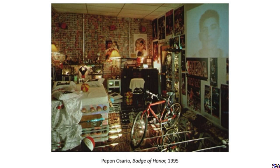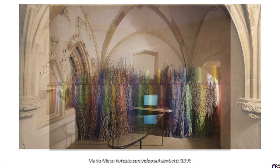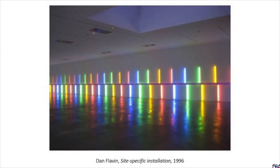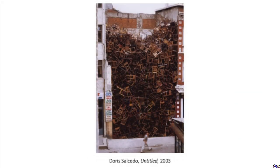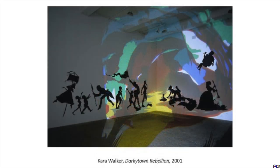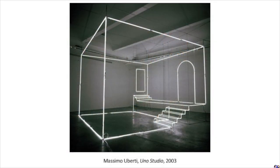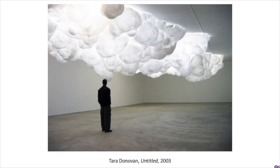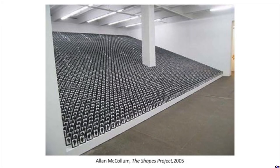Artists have used installations to explore aspects of nature, psychological states, politics, and social conditions. Some installation art is site-specific, meaning it was made for a particular space. Other installations move from place to place and adapt to the space in which they are situated. Installations occur both indoors and out, and can be expansive or intimate.